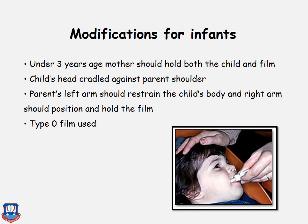For infants under three years of age, the mother or parent holds the child and the film. The child's head is cradled against the parent's shoulder, the parent's left arm restrains the child's body, and the right arm positions and holds the film. This helps obtain radiographs in uncooperative children or those unable to understand the need. A type 0 film is used for these children.